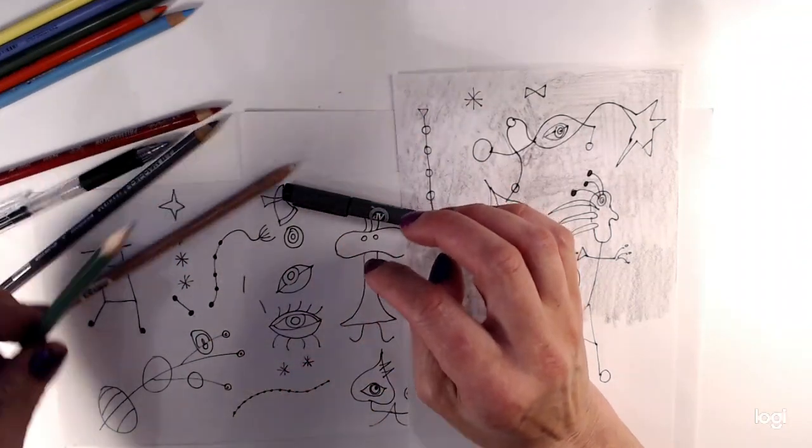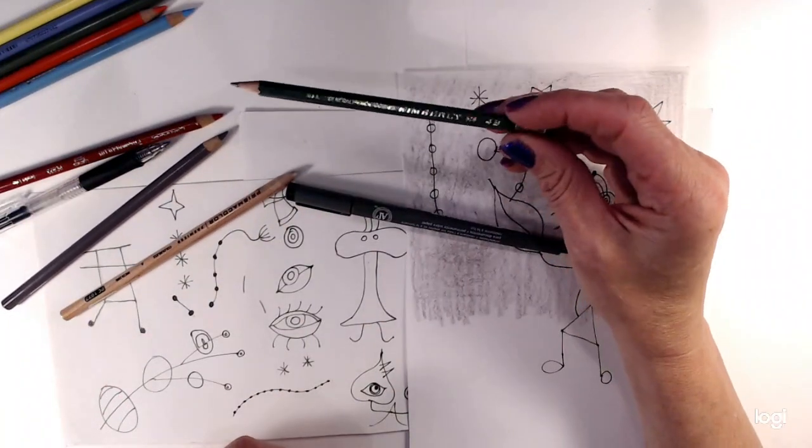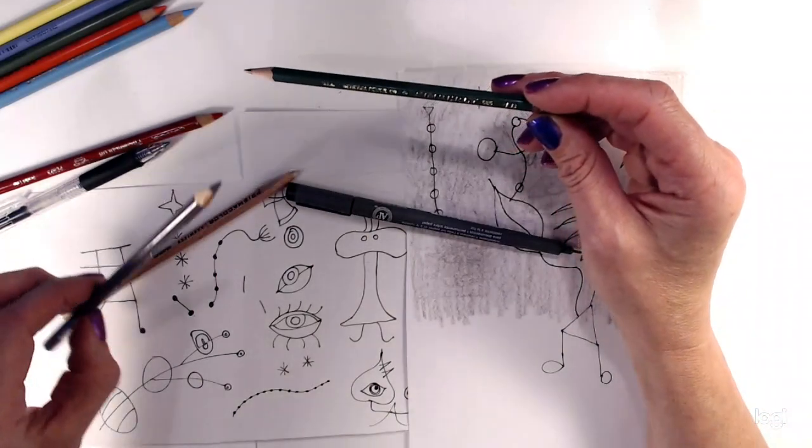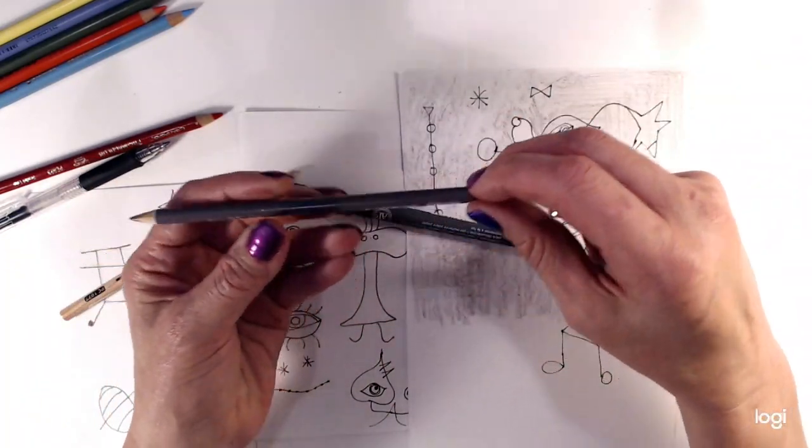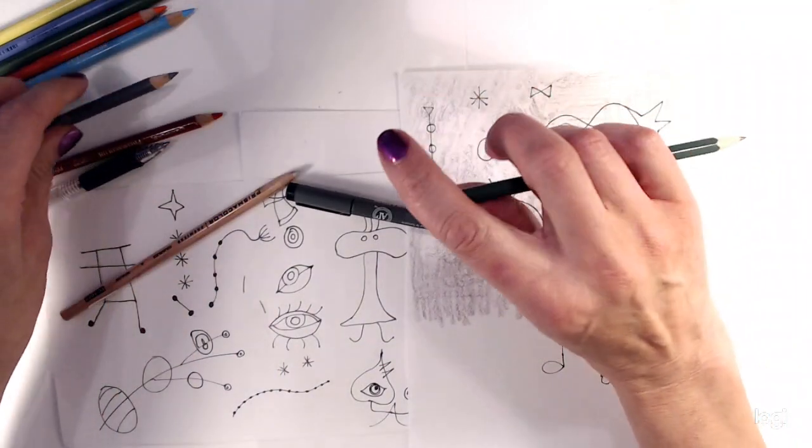You're also going to need a basic drawing pencil. I like a 4B. It's nice and soft and easy to work with. A color for the background, which I'm going to use a nice warm gray today.